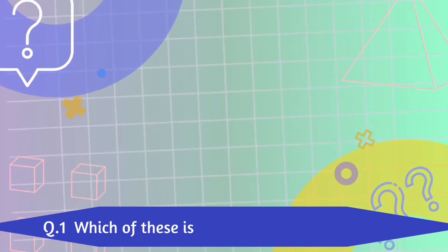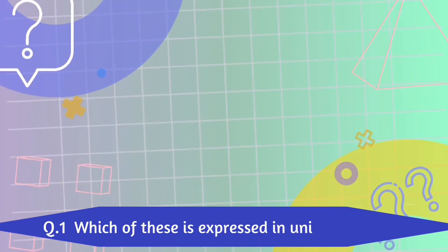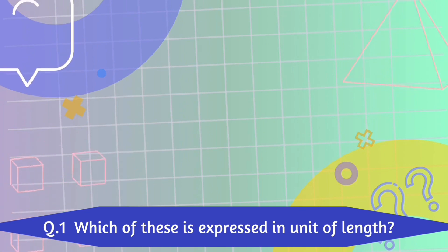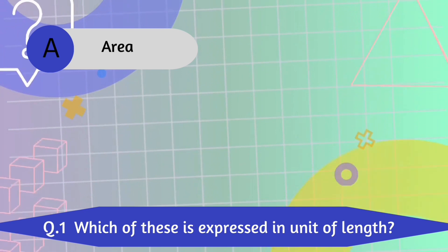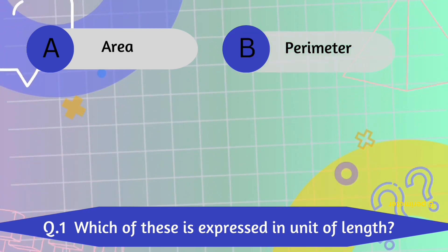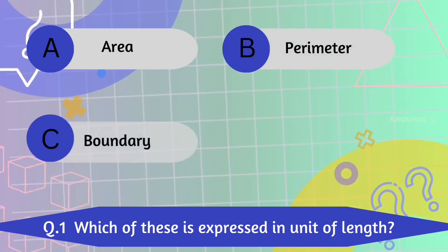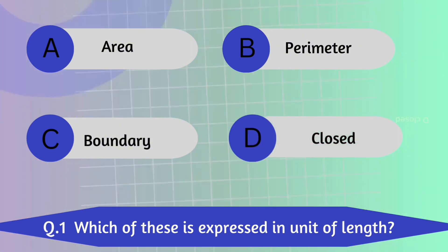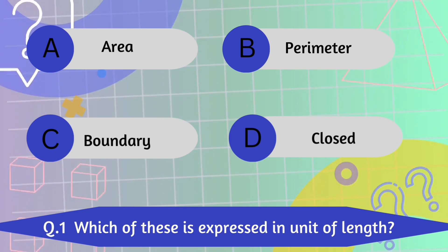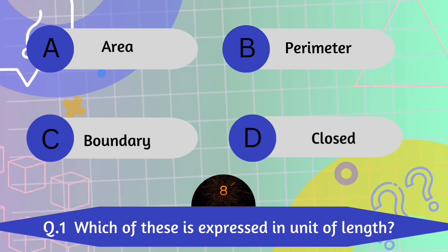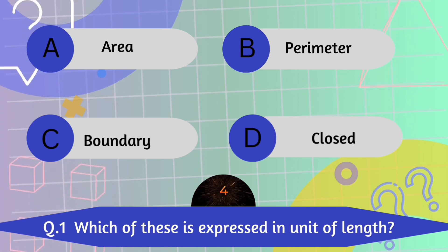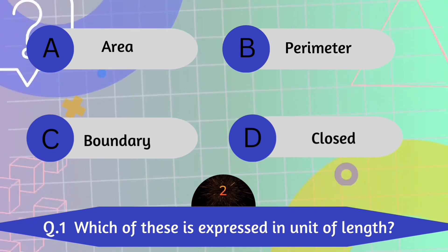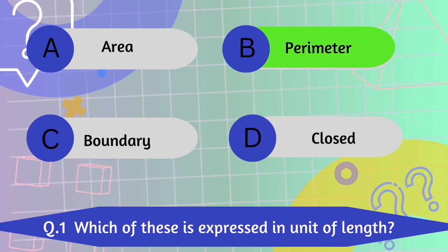Question number 1. Which of these is expressed in unit of length? A. Area. B. Perimeter. C. Boundary. Perimeter is the correct answer.